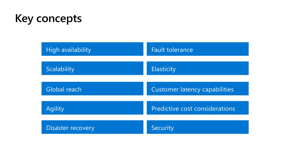Global reach refers to the ability to increase access between an organization and its current and potential customers, regardless of where they are. If my company is based in the United States but has offices and customers in many countries worldwide, I can leverage the global reach capabilities of the cloud to bring the services and data closer to the users instead of them all having to connect to my services in the United States.